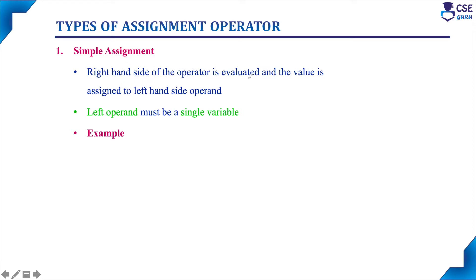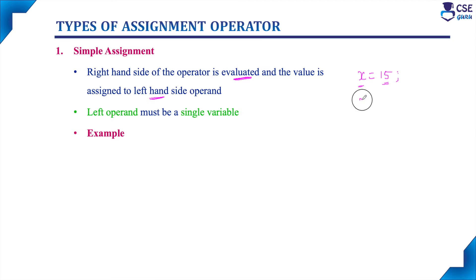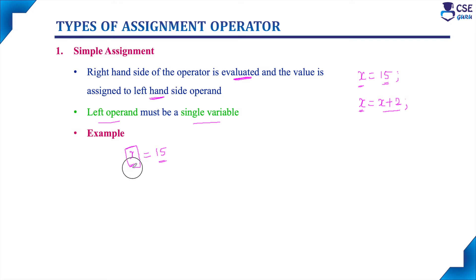The first type is simple assignment. Here, the right-hand side of the operator is evaluated and the value is assigned to the left-hand side variable. For example, x = 15: the value 15 is assigned to variable x and stored in x's memory location. For x = x + 2, the value of x is added with 2 and the result is stored in x's memory location. The left operand must be a single variable.